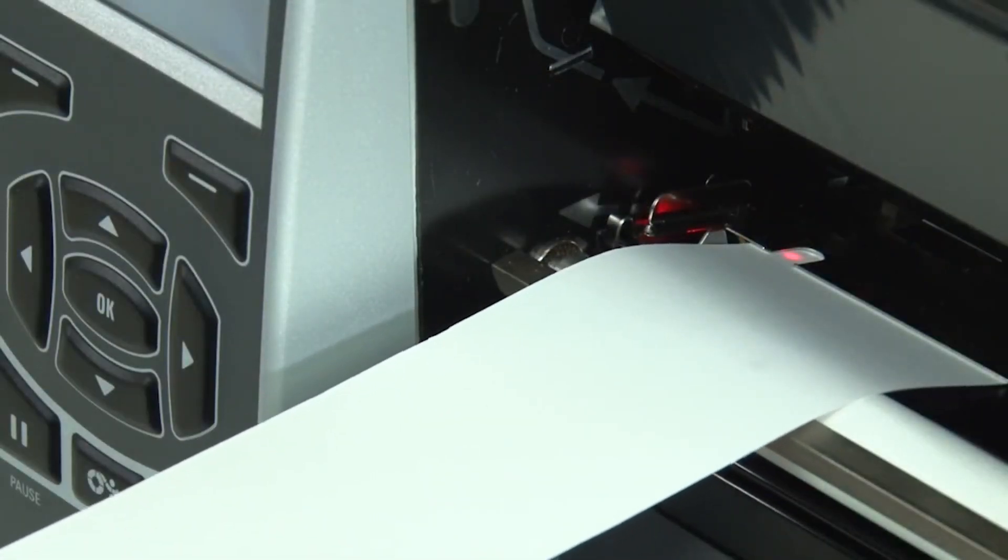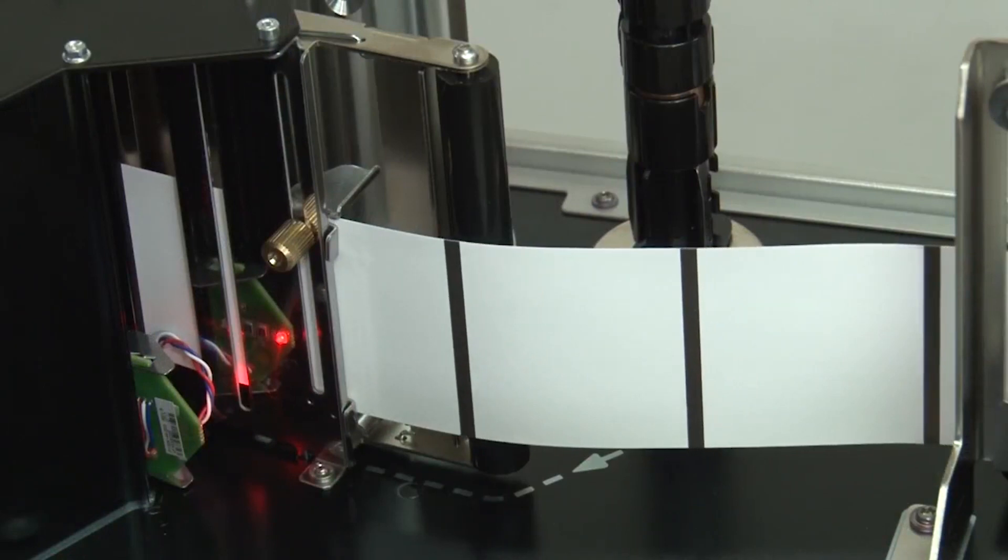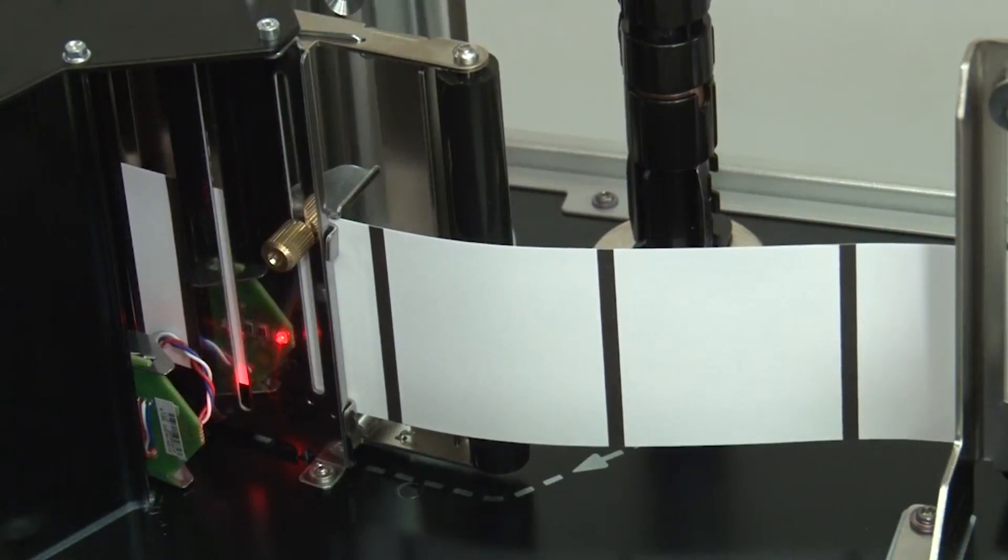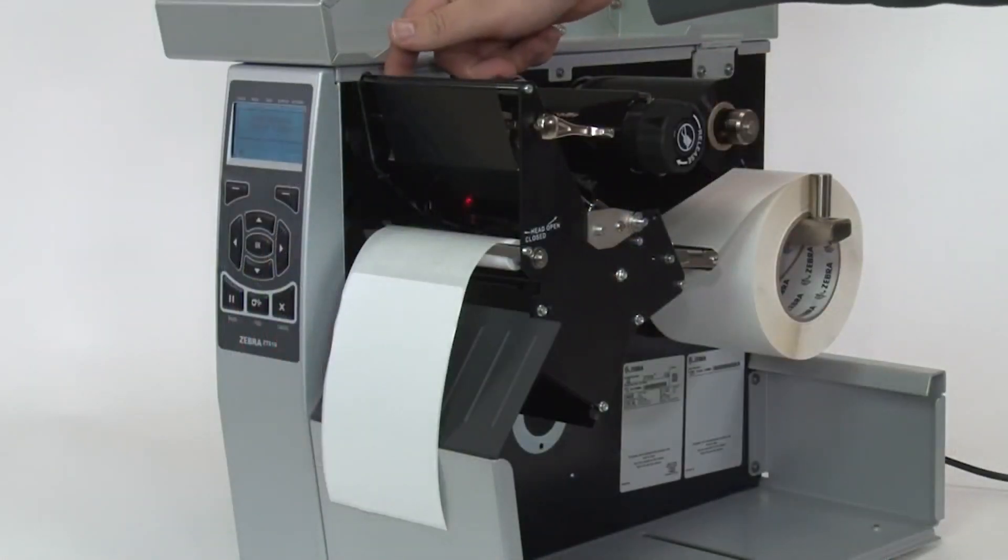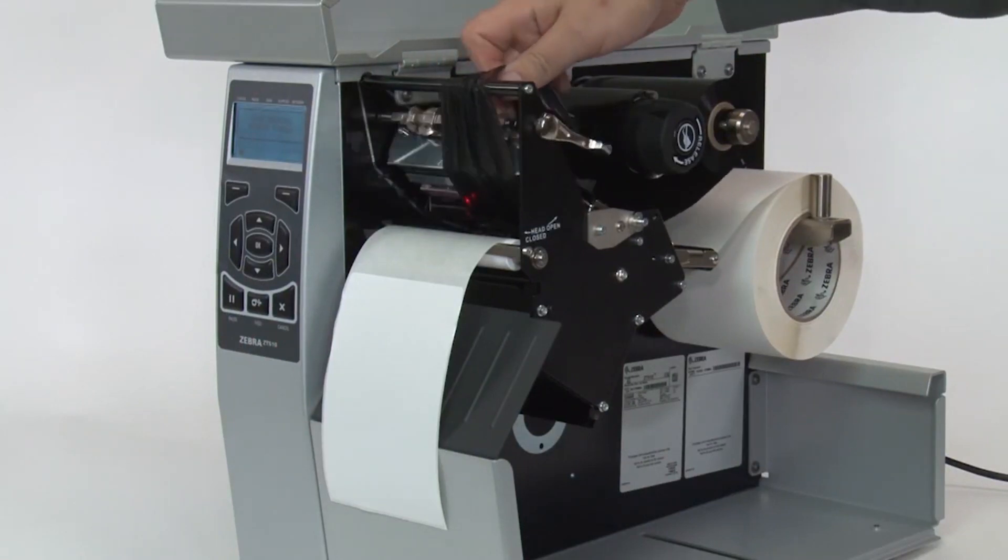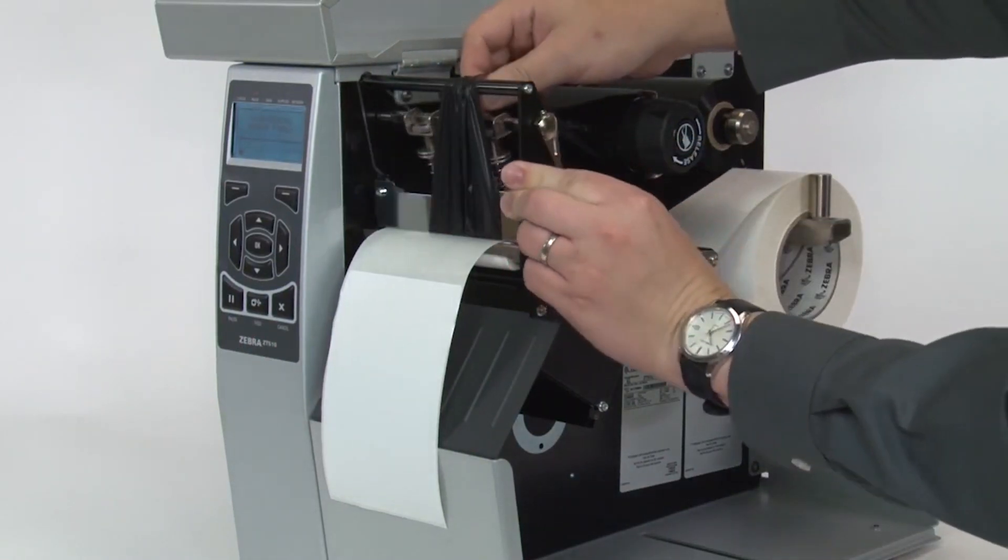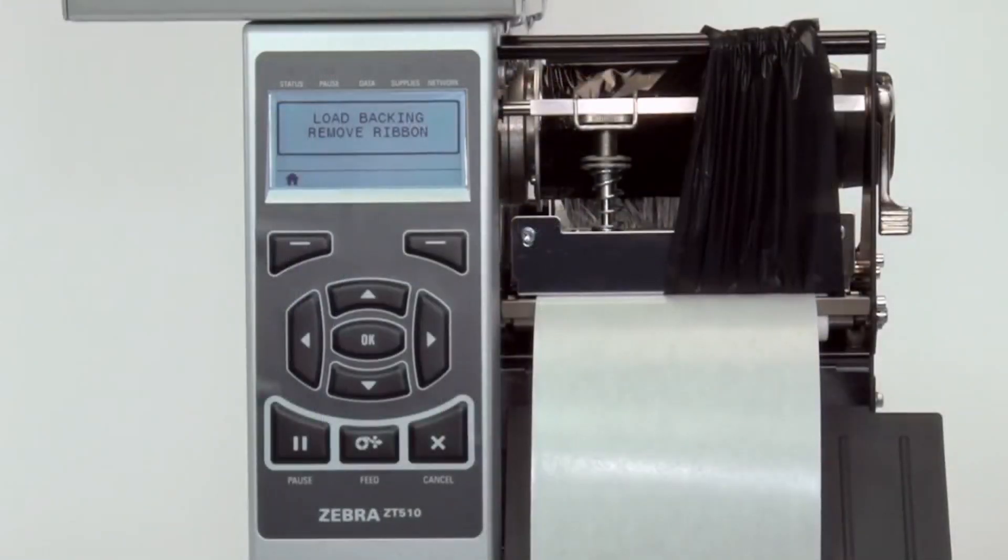If your media has a black mark on the underside of the media, please ensure that the black mark is not over the mark sensors. If you are using ribbon, the ribbon must be removed from the ribbon sensor location on the inboard side of the printer. Close the printhead. When you have completed these steps, press the pause button to continue.